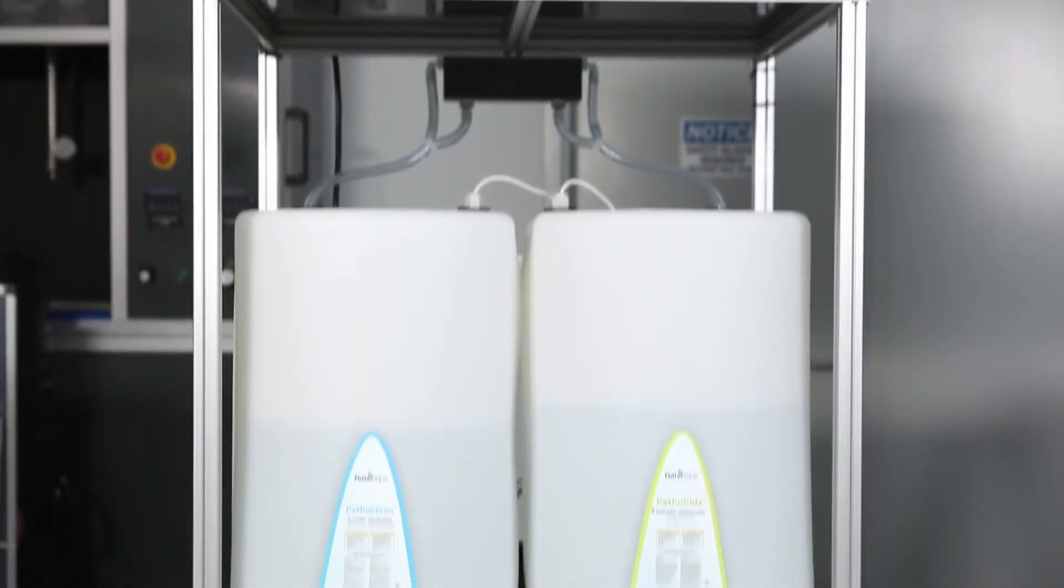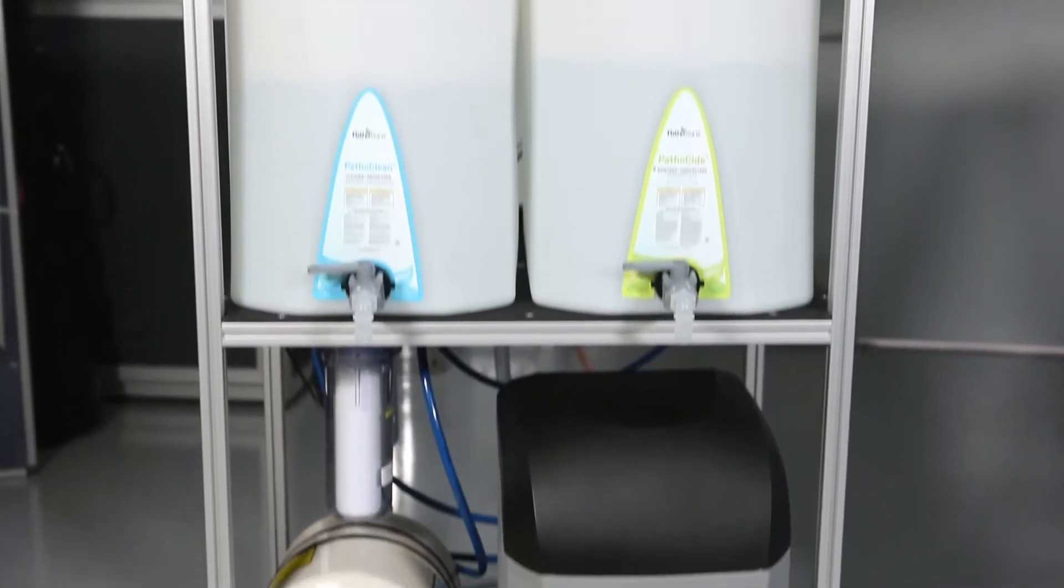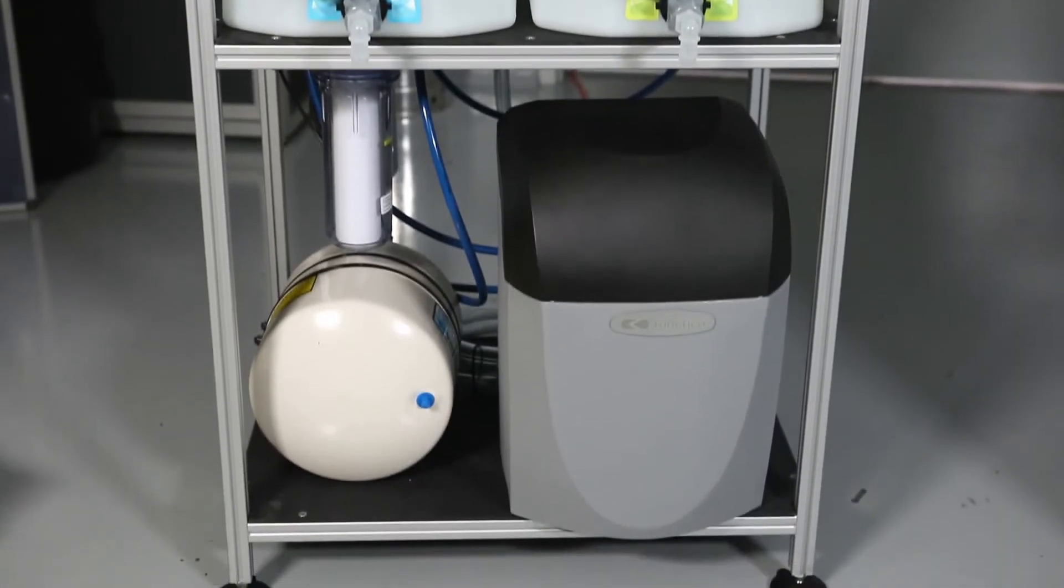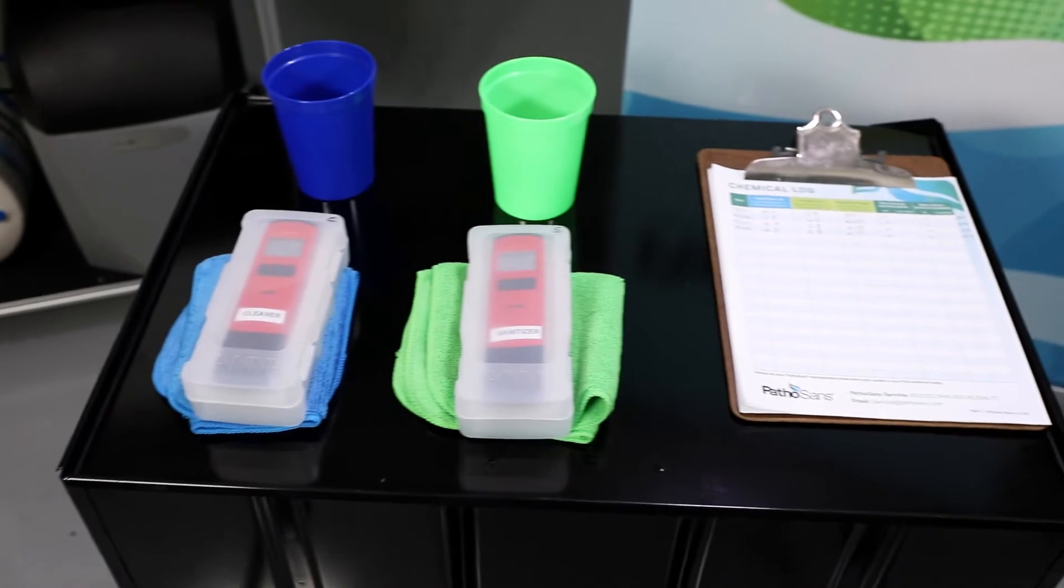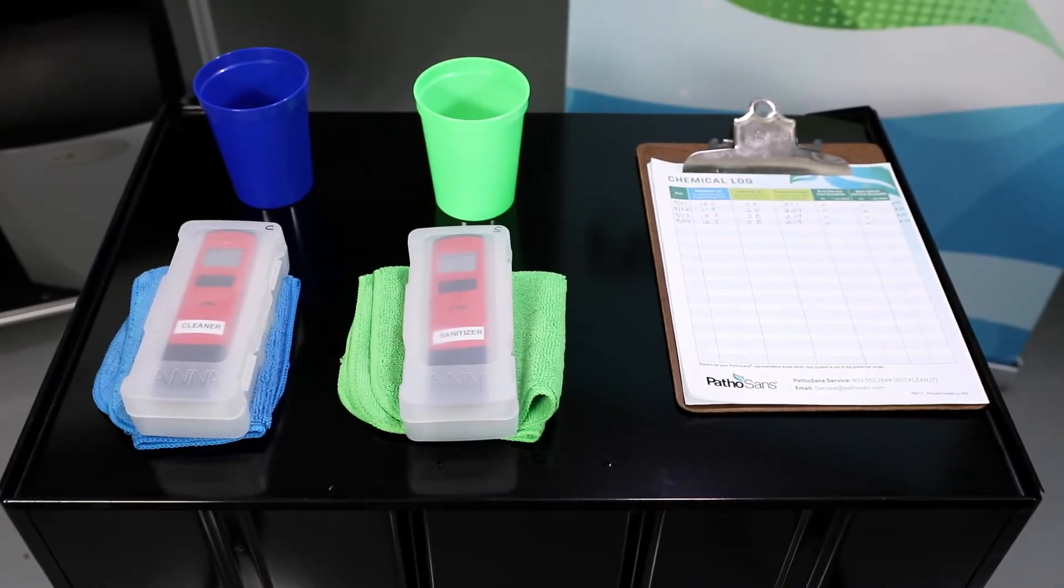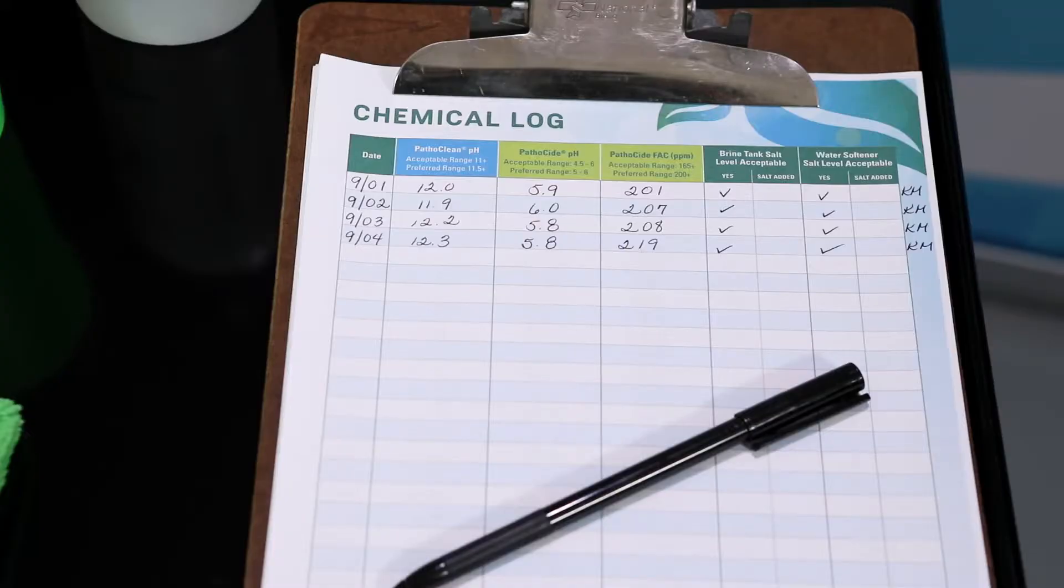Ideally, the pH of Pathoclean should be above 11.5 and the pH of Pathosanide should be between 4.5 and 6.0. These red meters should be used in checking the pH of each solution daily or at least several times a week and recorded on the daily log sheet.